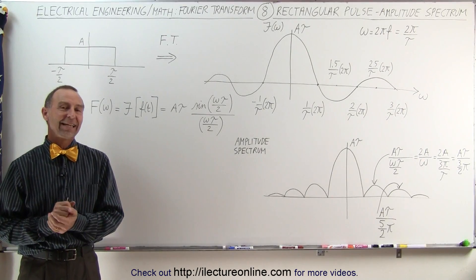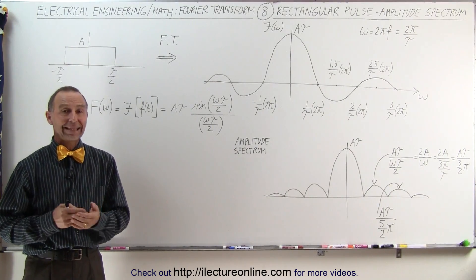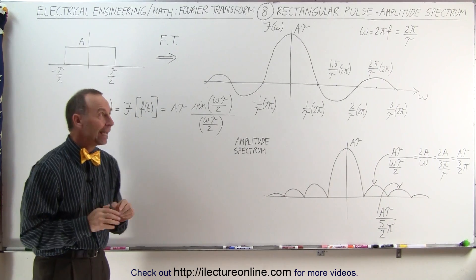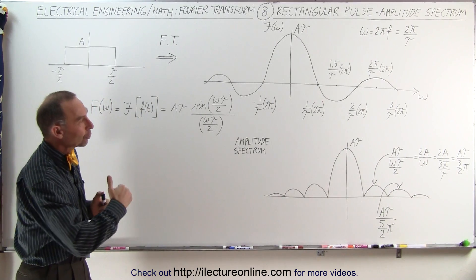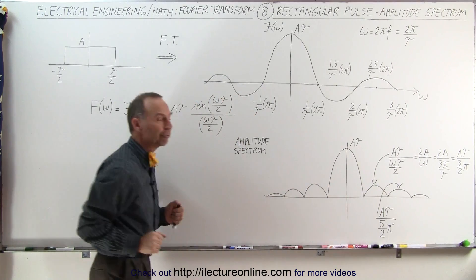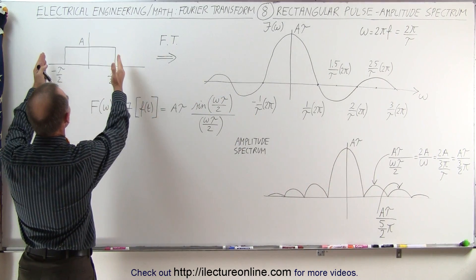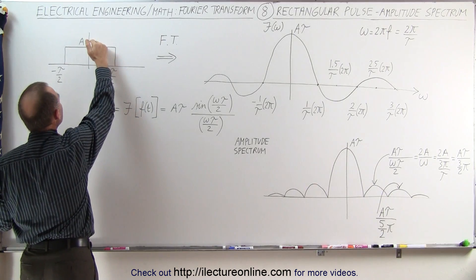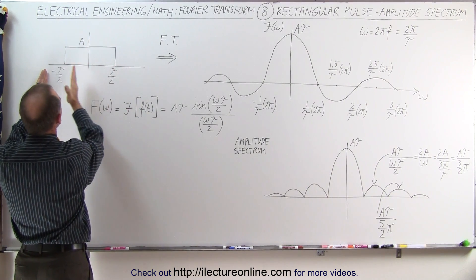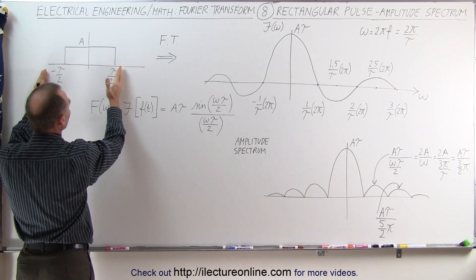Welcome to iLectroOnline. In this video we're going to take a closer look at the Fourier transform of a single pulse, and in particular we're going to look at what we call the amplitude spectrum of that Fourier transform. Here we have a single pulse that has amplitude A and pulse width tau, starting from minus tau over 2 to tau over 2.